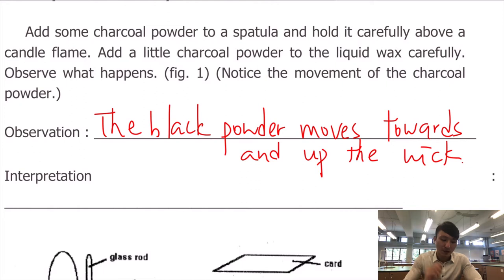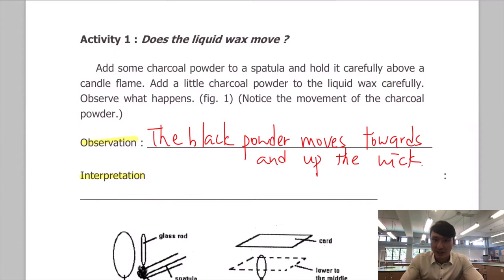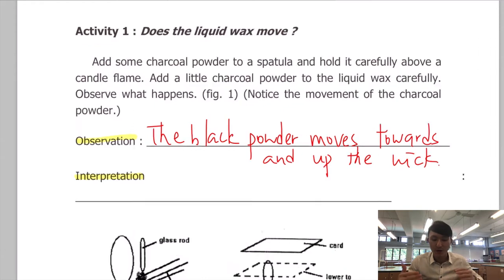Notice that we use the word 'black powder' instead of 'charcoal powder' because for the observation, we are writing down what we actually see. For the interpretation, which means what we can tell from the observation: judging from the fact that the black powder moves towards and up the wick, it tells us that the liquid wax also moves towards and up the wick.